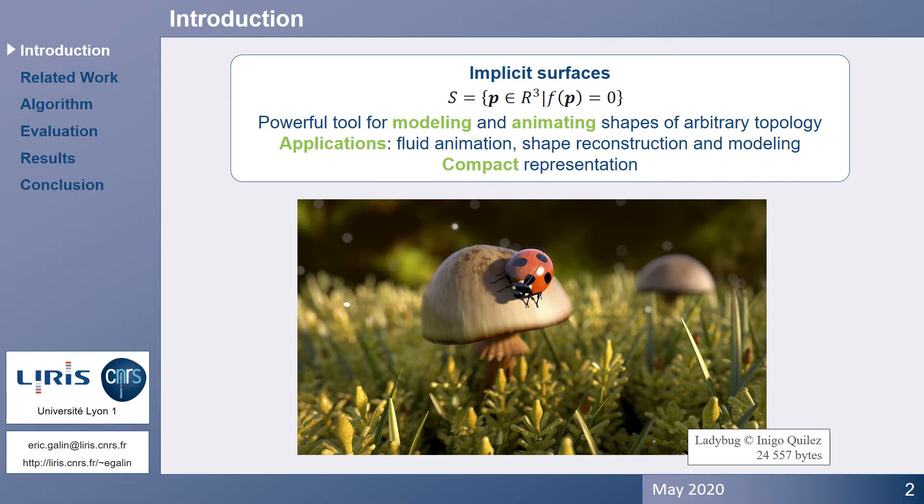One crucial aspect of implicit surfaces is that they define complex objects, possibly with many details, in a very compact function representation. Procedurally defined implicit surfaces have gained popularity by the beautiful procedural models developed by Inigo Quillius, such as this beautiful ladybug surrounded by grass beads and mushrooms.